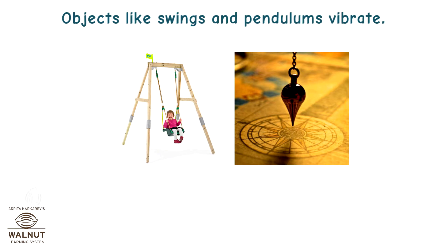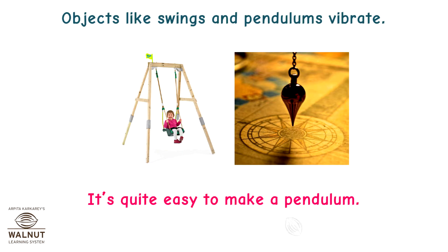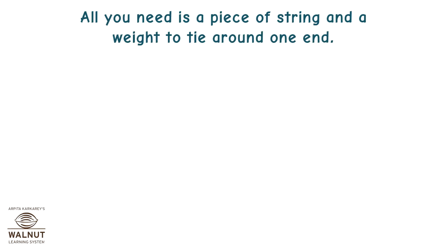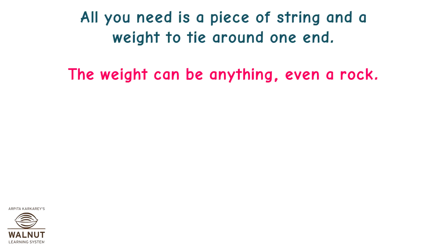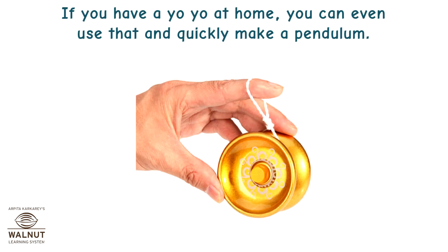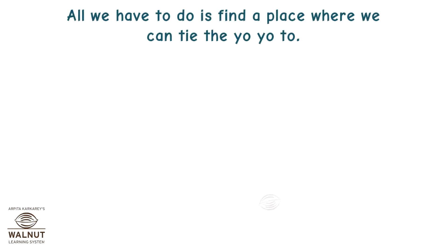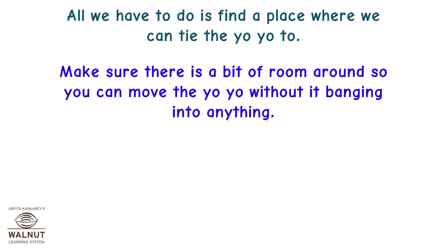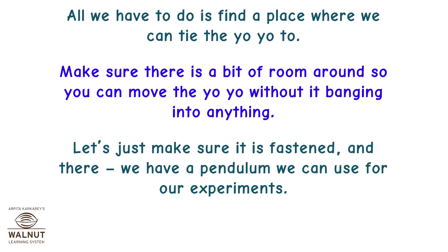Objects like swings and pendulums vibrate. It's quite easy to make a pendulum. All you need is a piece of string and a weight to tie around one end. The weight can be anything, even a rock. If you have a yo-yo at home, you can use that to quickly make a pendulum. All you have to do is find a place where you can tie the yo-yo. Make sure there is a bit of room around so you can move the yo-yo without it banging into anything. And there, we have a pendulum we can use for our experiments.